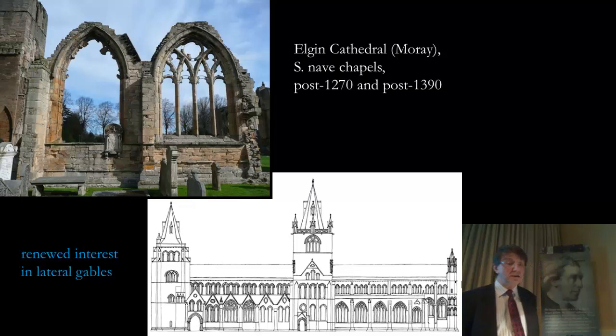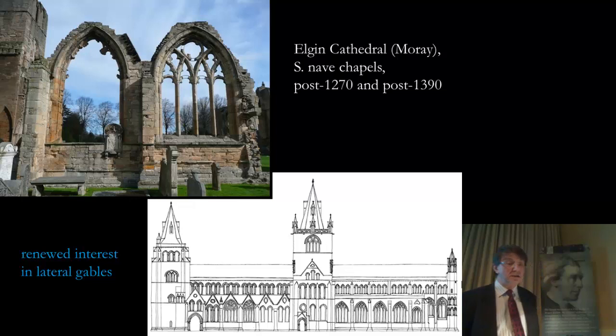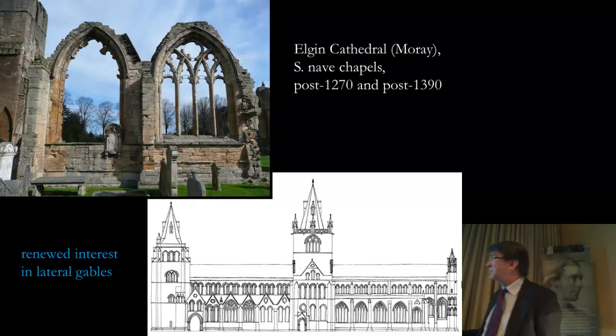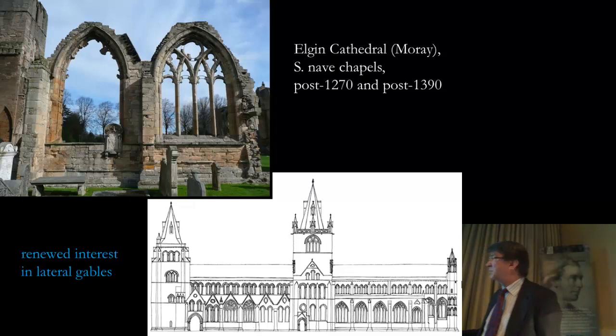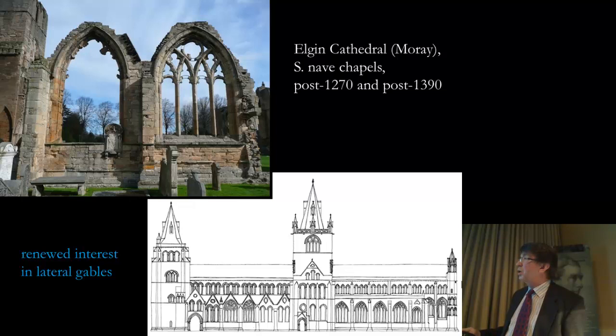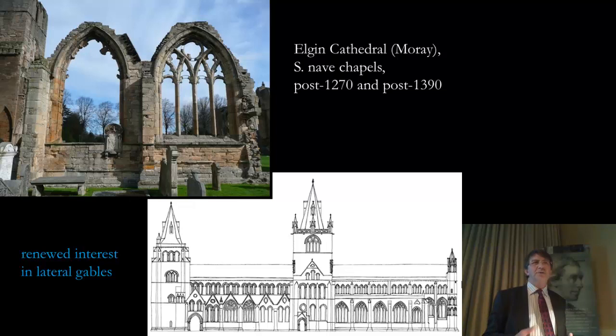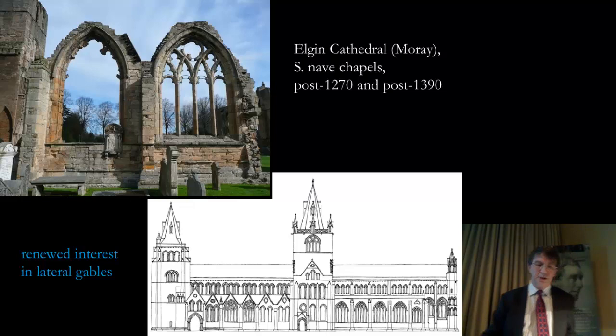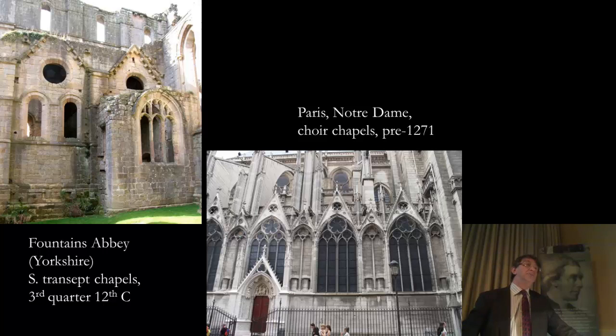I don't want to get carried away with this, but you also must have seen something similar at Elgin Cathedral. A sketch I attempted gives an idea of what the cathedral may have looked like when completed. We do still have these lateral gables over the two surviving upstanding sections of chapel, and I think it's very likely that they extended all the way along the nave aisle. It's difficult to be certain whether they first date from the post-1270 reconstruction or the post-1390 reconstruction. Let's not go too far, because there was a long tradition of having separately gabled chapels.